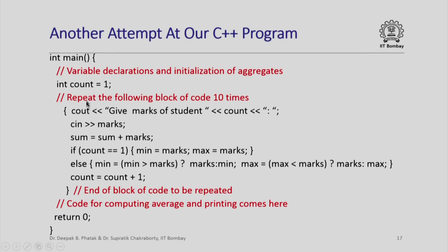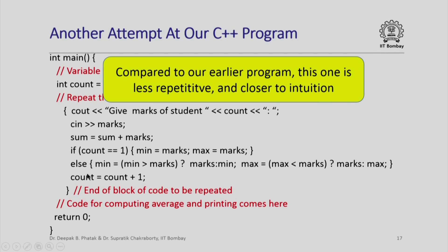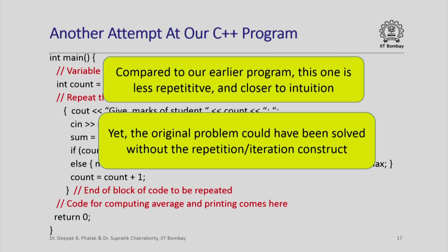This code would be much closer to our intuition than the previous code where we made 10 copies of the statements — because we have just written down the statements we want to execute for each of the 10 students and then say 'repeat this 10 times'. Yet in this case the original problem could have been solved without the iteration construct, meaning that here the repetition construct is handy, giving us convenience and allowing us to write the program closer to our intuition, but it is not absolutely necessary.